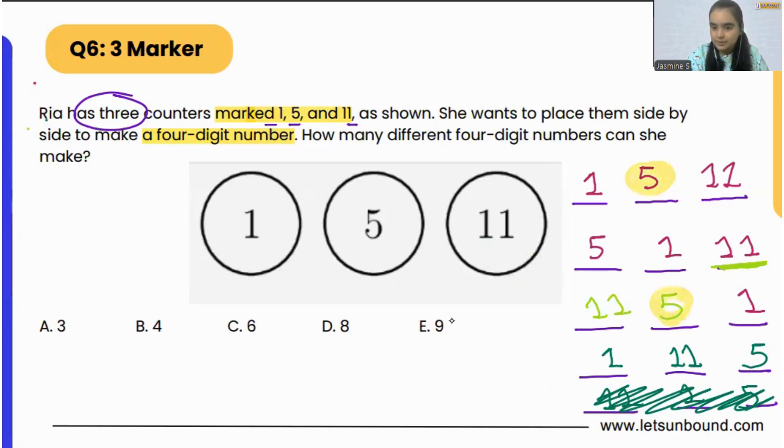There's no other way 5 can go in between to make different numbers. The first one starts with 1, the other starts with 11, so we get two different numbers. Then 5 can go in the beginning and form only one unique number. If we change the places of 11 and 1, it remains the same number.